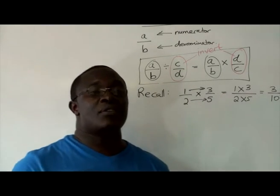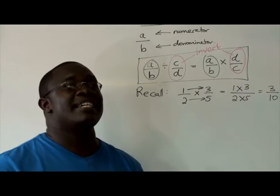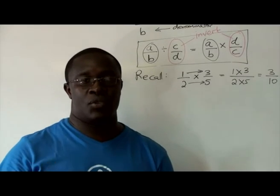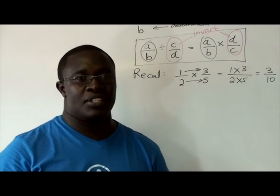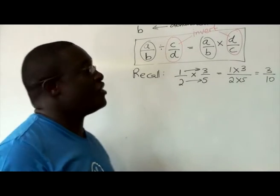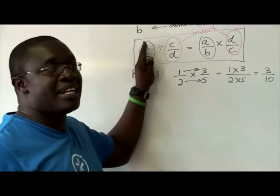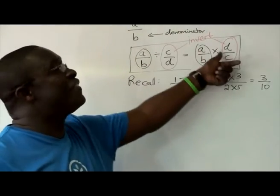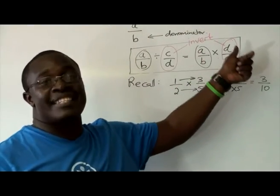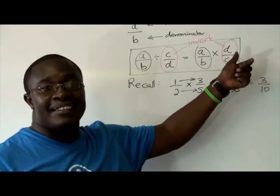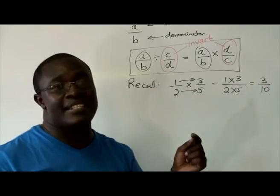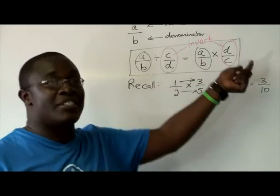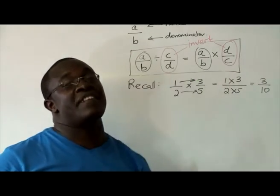As a rule of thumb, whenever somebody asks how do you divide two fractions, you say: you write the first one as is and you flip over the second one. That is the inverting, where the numerator becomes the denominator and vice versa.